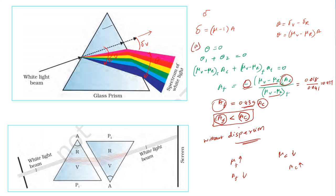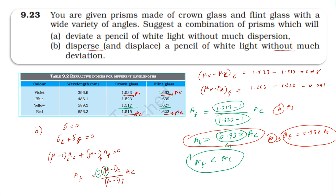Summary of answers: For Case 1 (deviation without dispersion), the angle of flint prism equals 0.439 times the angle of the crown prism. For Case 2 (dispersion without deviation), the angle of flint prism equals 0.932 times the angle of the crown prism — confirming the angle of flint is less than the angle of crown in both cases.